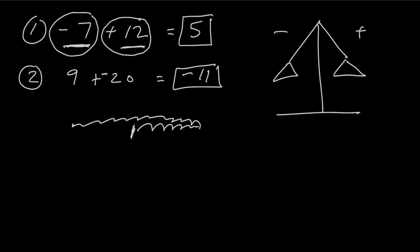If you had exactly 9 negatives and 9 positives, of course they would balance out, cancel out, and you'd end up with 0. But in this case, you can see we have more negative numbers than positive numbers, so the scale is going to tilt towards the negative side. How many more negative numbers are there than positive? Well, there are more negative numbers by 11, so it's negative 11.